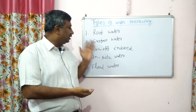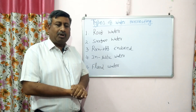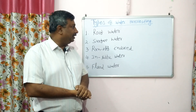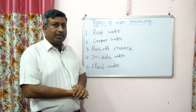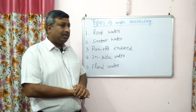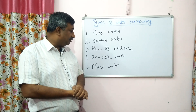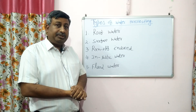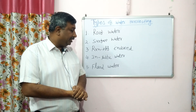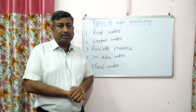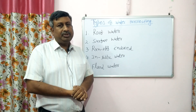In general, there are five types of water harvesting: roof water harvesting, surface water harvesting, runoff induced water harvesting, in-situ water harvesting, and flood water harvesting.